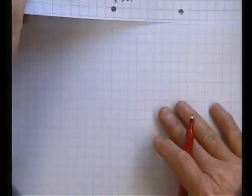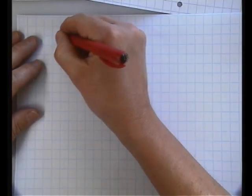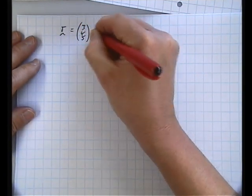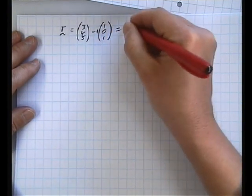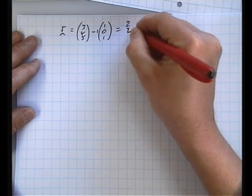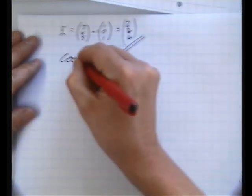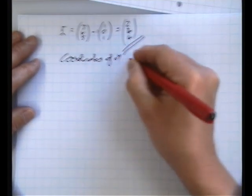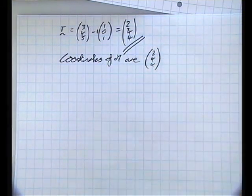So to find the coordinates where that actually meets the plane, I simply substitute that value of t into my line. So I get r equals (3, 4, 5) minus 1 lot of (1, 0, 1), which is going to give me (2, 4, 4), which then is, to write it properly, the coordinates of M: (2, 4, 4), which is what they asked us to find.